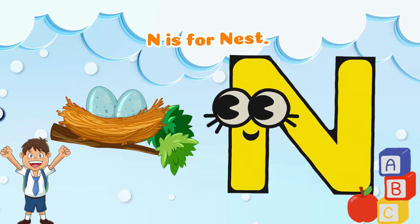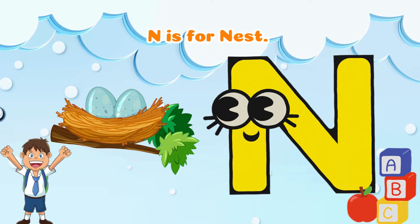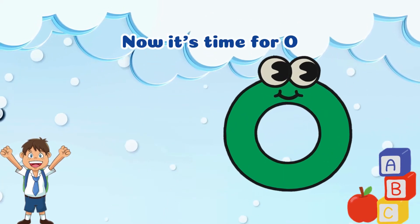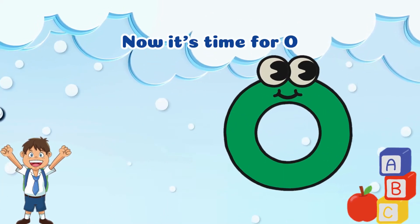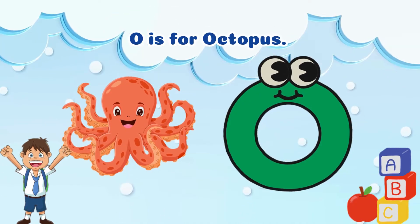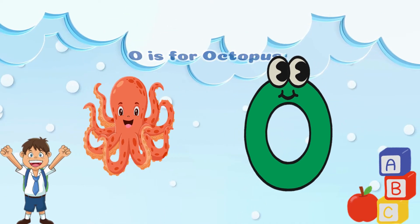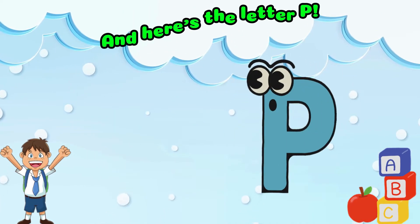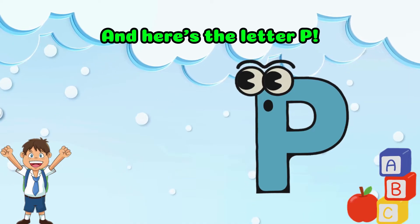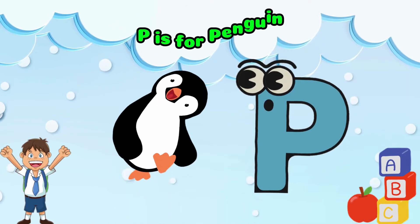N is for Nest. Now it's time for O. O is for Octopus. And here's the letter P. P is for Penguin.